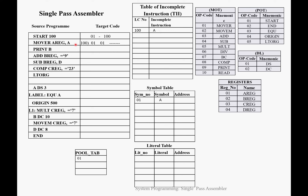Next is PRINT B. Increment location counter to 101. PRINT is at the 9th position in MOT, first operand is not present (dash). B is a new symbol — we don't know its address, so keep it blank. We add B to the symbol table at the second position and also add the information of B with location counter 101 into the table of incomplete instructions.